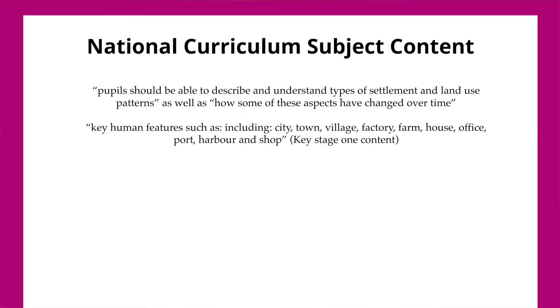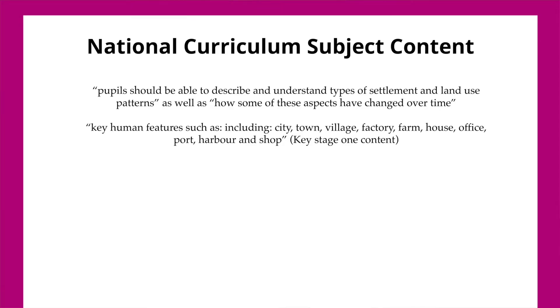The National Curriculum states that pupils should be able to describe and understand types of settlement and land use patterns, as well as how some of these aspects have changed over time. This unit helps pupils to consider these main types of settlements and land use, as well as recapping the Key Stage 1 content on key human features such as cities, towns, villages, farms, houses, offices, ports, harbours and shops.